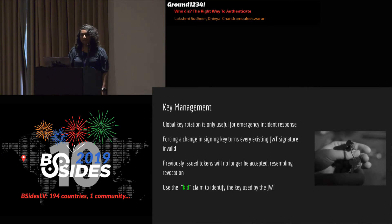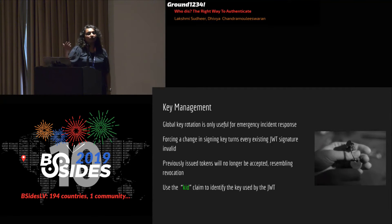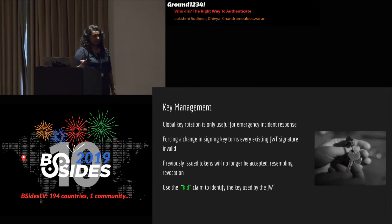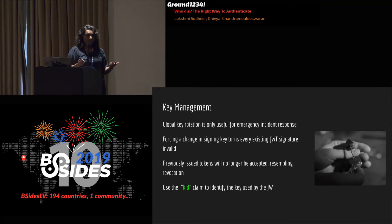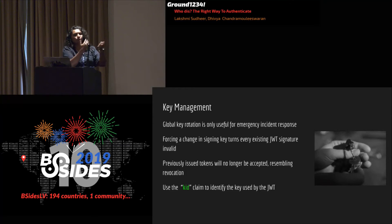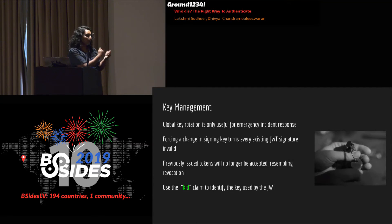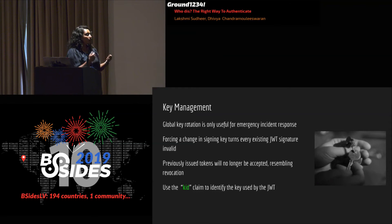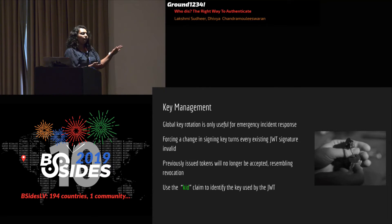What about key management? One scenario is where the key on your authorization server or token issuer gets leaked. How do you rotate it? If you rotate all keys, it's a global logout and all JWTs become invalid. One approach is using the key identification claim — 'kid' — provided by the JWT RFC, which lets you identify which key was compromised and rotate only that specific key. It's an accepted reality that forcing a change in signing keys will invalidate every JWT.